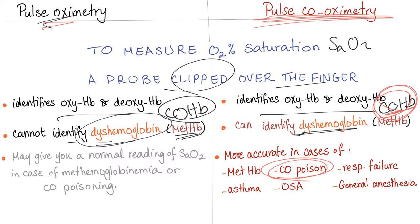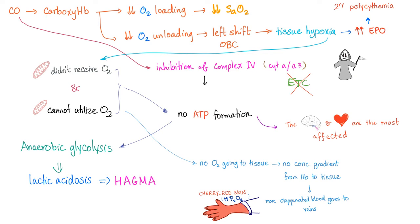Why not pulse oximetry? It can be falsely normal, leading you to incorrectly discharge a CO-poisoned patient. Carbon monoxide leads to carboxyhemoglobin, which decreases oxygen loading and saturation, and decreases oxygen unloading — causing a left shift of the oxygen dissociation curve and tissue hypoxia. As a response, EPO rises, leading to secondary polycythemia — true in chronic CO poisoning cases. In acute cases, there isn't time for EPO to increase, but it's theoretically correct.